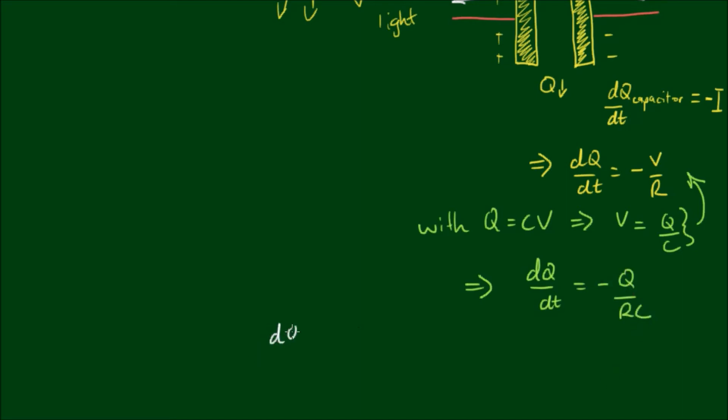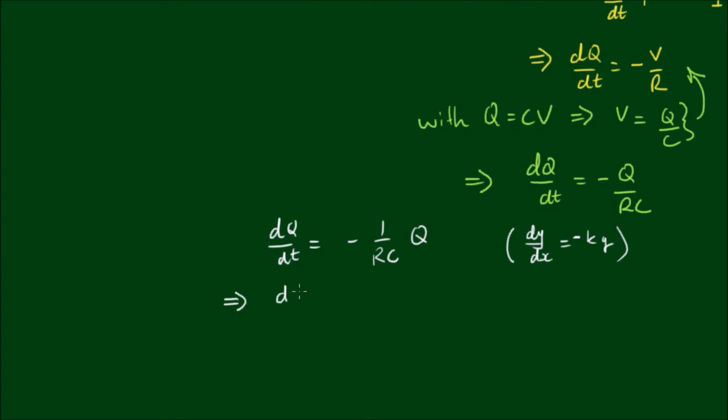Alright, so putting this in for voltage, we have dq dt equals negative Q on RC. Or if I write that more neatly, we have dq dt equals negative 1 on RC by Q. So this is now the same form of differential equation as we had before, dy on dx equals negative KY. So we can now just separate the variables, get all the Q's on the one side and get all the T's on the other side and integrate. So we'll have dq on Q on the left-hand side and minus 1 on RC dt on the right-hand side. And now we can integrate both sides.